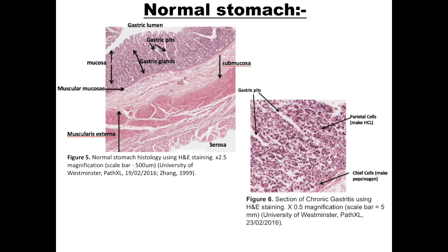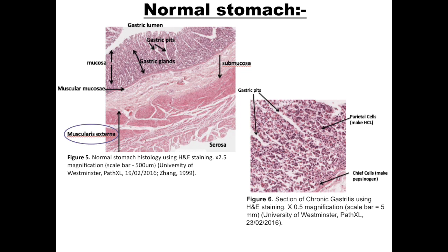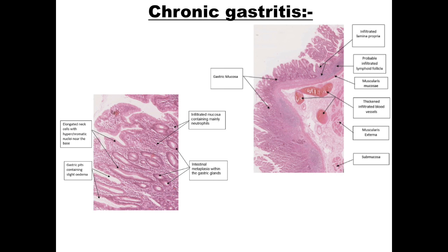The stomach consists of four layers: the outer mucosa, inner submucosa, muscularis externa, and serosa. The gastric mucosa has epithelium, lamina propria, and muscularis mucosa, which is a thin layer of smooth muscle separating the gastric mucosa from the submucosa. The submucosa separates the mucosa from the next layer and is made of fibrous connective tissue. Beneath this lies the muscularis externa, consisting of three layers: the inner oblique, middle circular, and outer longitudinal layer. The serosa is made up of connective tissue layers, which is continuous with the peritoneum.